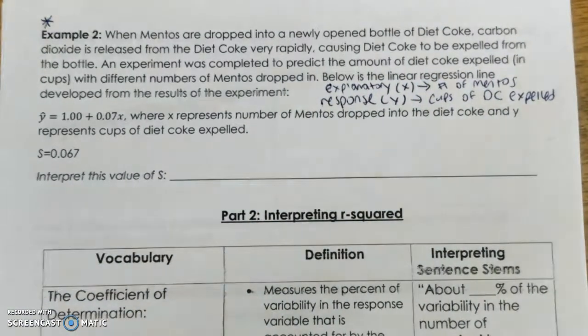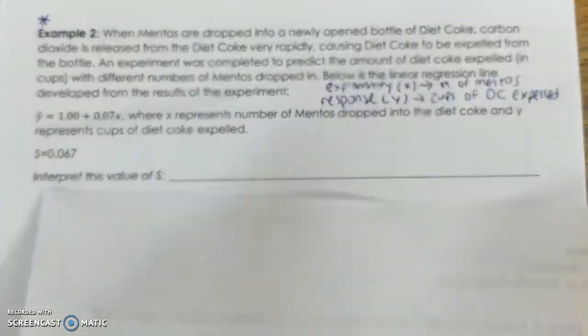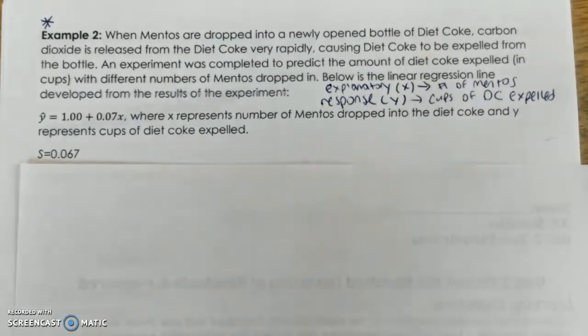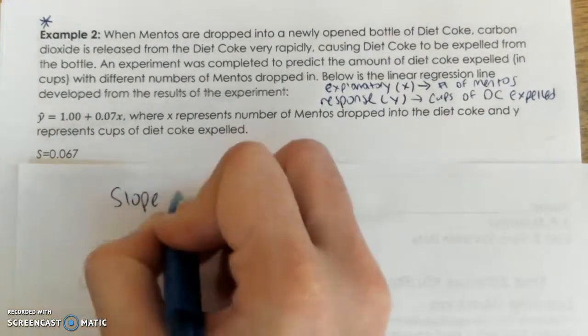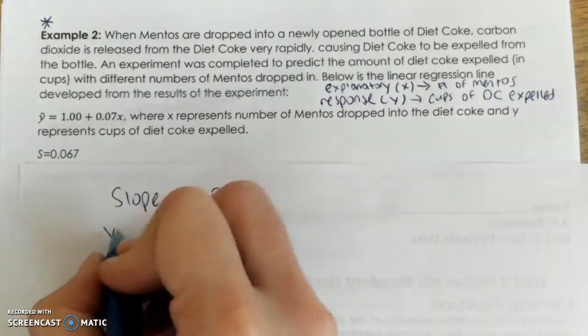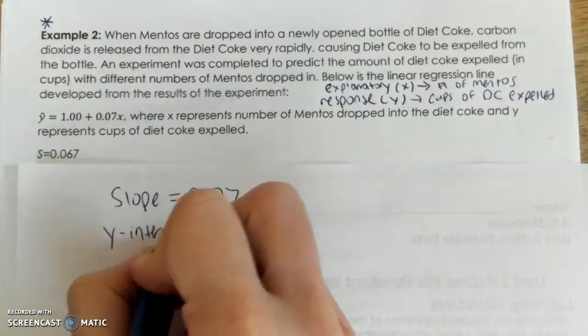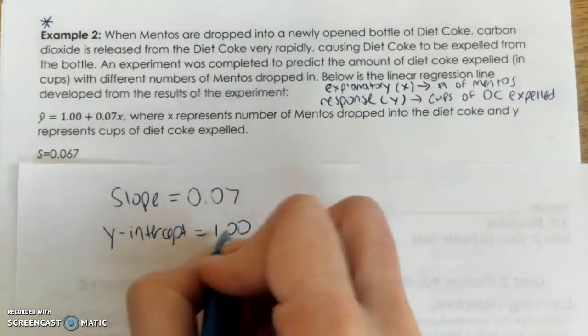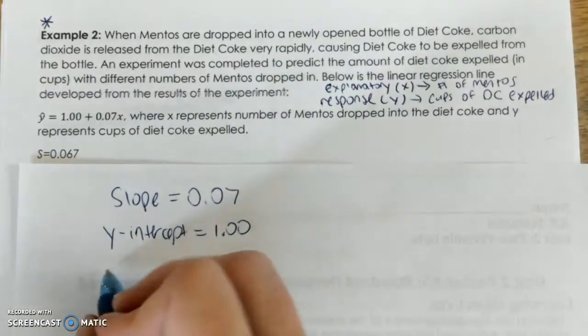All right, so here's our linear regression line. Y hat, or the predicted value of Y, is 1 plus 0.07X, where X represents the number of Mentos dropped in, and Y represents cups of Diet Coke expelled. All right, before we do anything, I want to go ahead and just interpret the Y-intercept and the slope to get you a little bit more practice, right? So my slope is 0.07, and my Y-intercept is equal to 1.0. All right, so let's talk about what each of these mean.